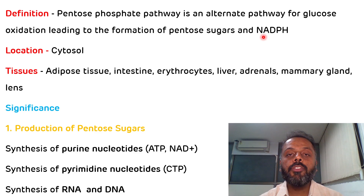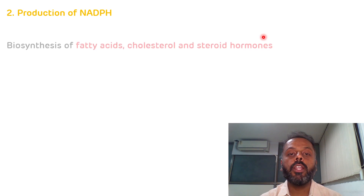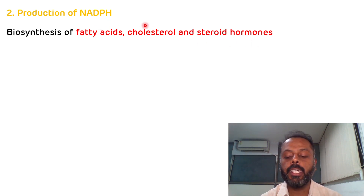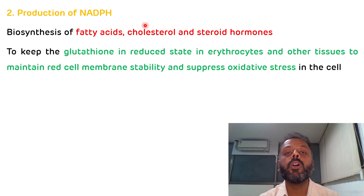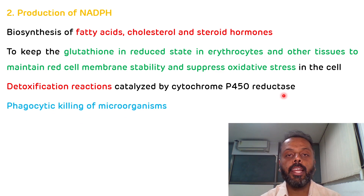Now we will see the significance of NADPH. NADPH synthesized in the HMP shunt pathway is required for various reactions. It is required for the synthesis of cholesterol, fatty acids, and steroid hormones. NADPH is also important for the maintenance of RBC membrane integrity — we require reduced glutathione for this, and for the synthesis of reduced glutathione we require NADPH. Another significance is in detoxification reactions, which convert toxic products into non-toxic products, catalyzed by the NADPH-dependent cytochrome P450 reductase enzyme. NADPH is also important for the phagocytic killing of microorganisms and for the maintenance of transparency of the lens.